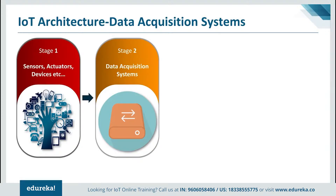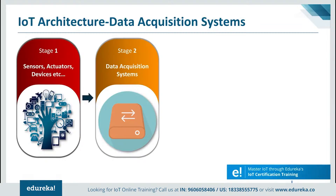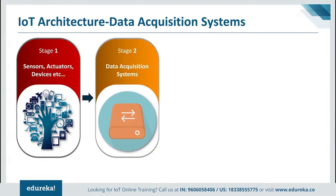Data acquisition systems perform aggregation and conversion functions, often situated in close proximity to the sensors and actuators. For example, a pump might contain a half-dozen sensors and actuators that feed data into a data aggregation device which also digitizes the data. An adjacent gateway device or server then processes the data and forwards it to the next stages.